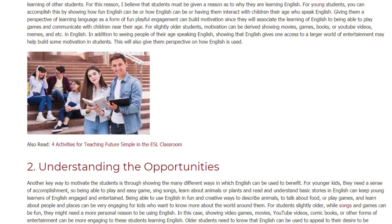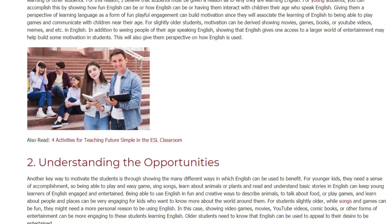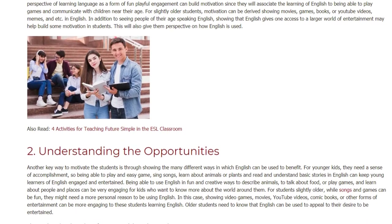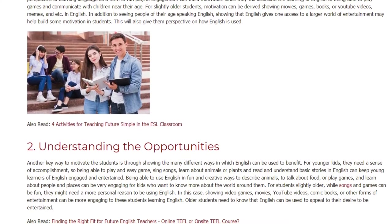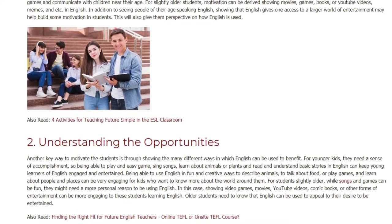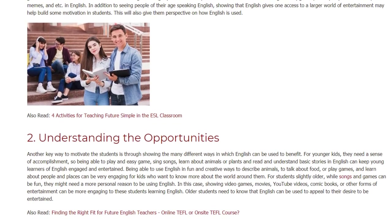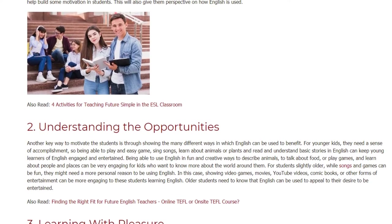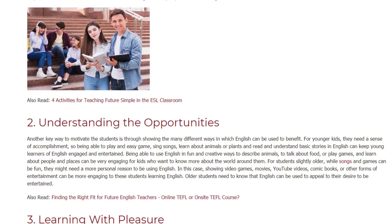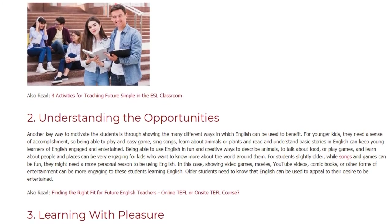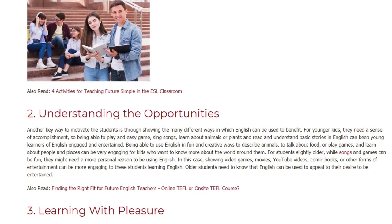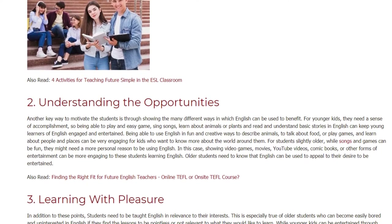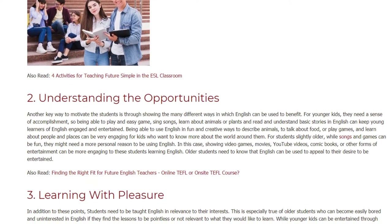Number two: Understanding the Opportunities. Another key way to motivate students is by showing the many different ways English can be used to their benefit. For younger kids, they need a sense of accomplishment — being able to play easy games, sing songs, learn about animals or plants, and read basic stories in English can keep young learners engaged and entertained. Being able to use English in fun and creative ways to describe animals, talk about food, or play games can be very engaging for kids who want to know more about the world around them.